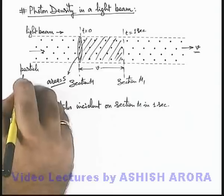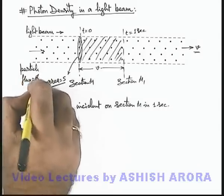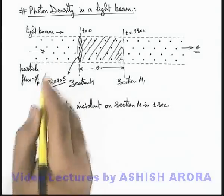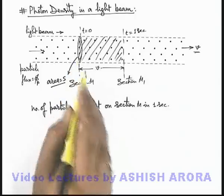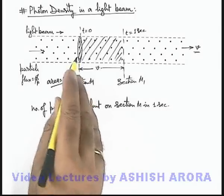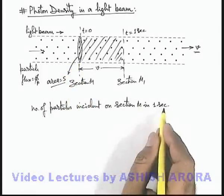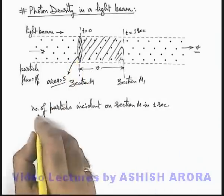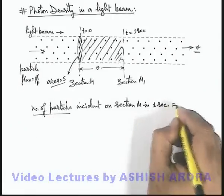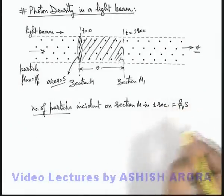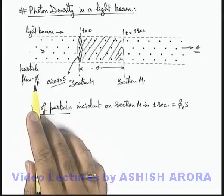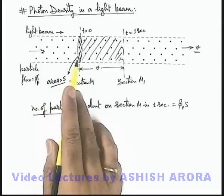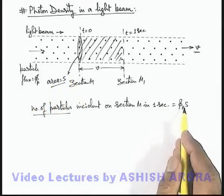say if particle flux is given as phi p, if these are photons, this is photon flux. Then phi p are the number of photons incident on this section per second per unit area. So in 1 second on area S, total number of particles or photons we can directly write as phi p S, because phi p is number of photons per unit area per second. So through area S, number of photons incident will be phi p S.